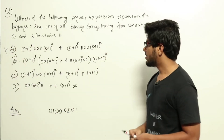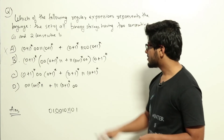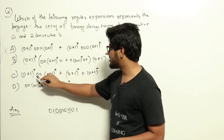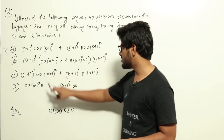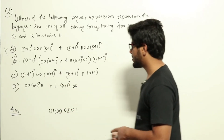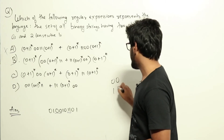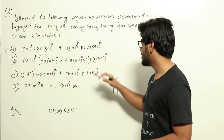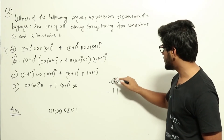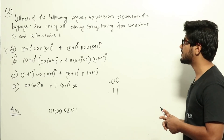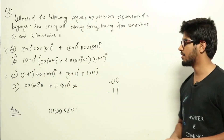Option C: (0+1)* 00 (0+1)* + (0+1)* 11 (0+1)*. This generates all strings which have either 00 or 11 as a substring. Our sample string is covered, but the problem is this expression can also generate the string '00' alone or '11' alone. Those strings don't belong to our language, which requires both 00 and 11 as substrings. So option C is also wrong.